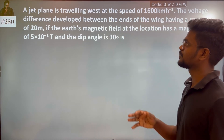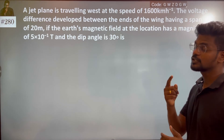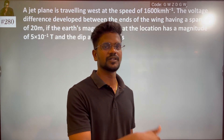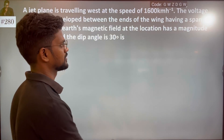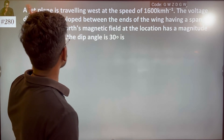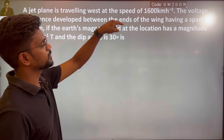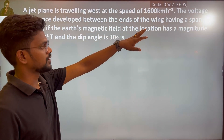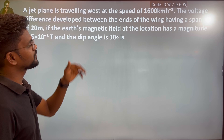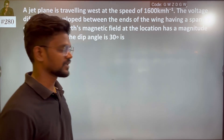A jet plane is travelling west at the speed of 1600 km per hour. We need to find the voltage difference developed between the ends of the plane's wings. We will convert that speed using 5 by 18 to get meters per second.